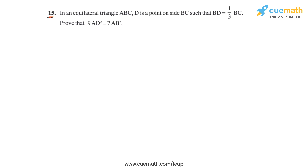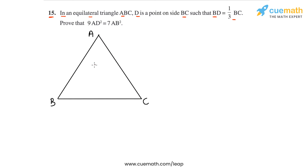Question 15 of this exercise says: in an equilateral triangle ABC, D is a point on side BC such that BD is equal to one-third of BC. Remember that an equilateral triangle is a triangle in which all sides are equal and all angles are equal to 60 degrees.